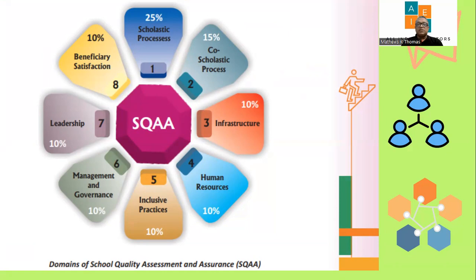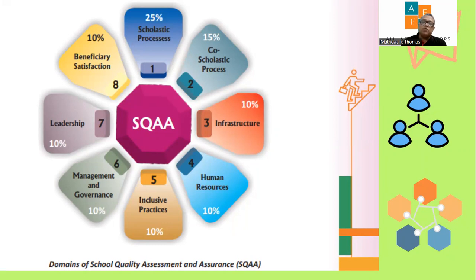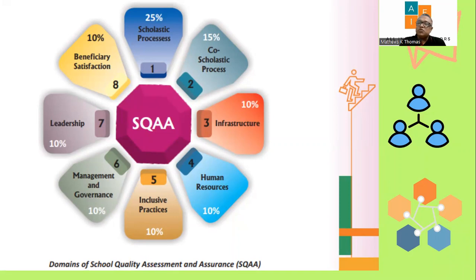Domain six is management and governance — how the school is run: senior management, middle level management, supervisors, coordinators, heads of departments, class coordinators — how they ensure the best learning outcomes. Domain seven is leadership — the principal and vice principal at the senior level. Domain eight is beneficiary satisfaction — are the teachers satisfied, are children excited to come to school, are parents satisfied, is the alumni happy with what is happening.